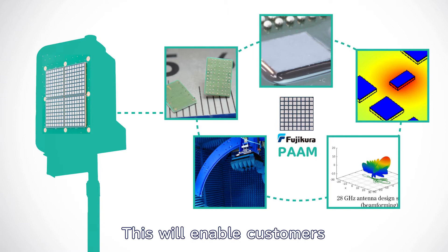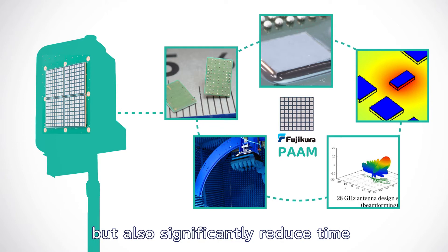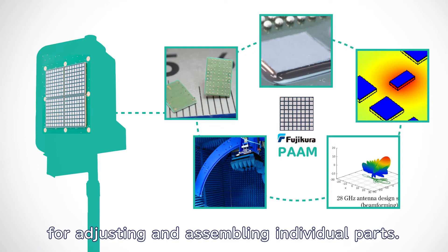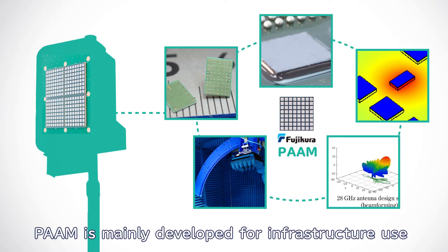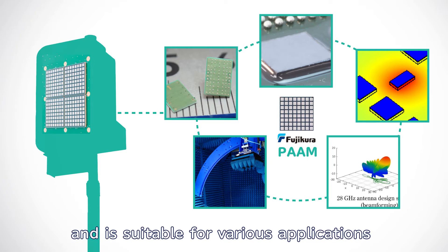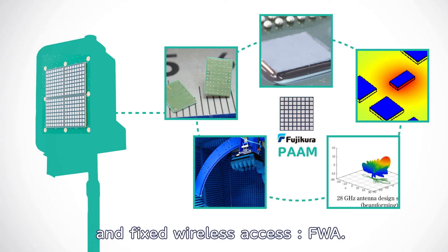This will enable customers not only to use our high-performance modules, but also significantly reduce time for adjusting and assembling individual parts. Fujikura's POM is mainly developed for infrastructure use, and is suitable for various applications, such as mobile network access, MWA, and fixed wireless access, FWA.